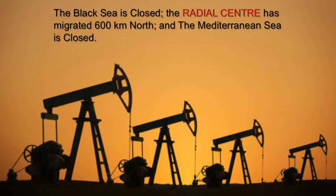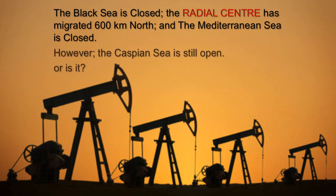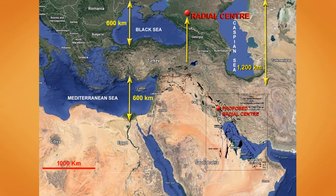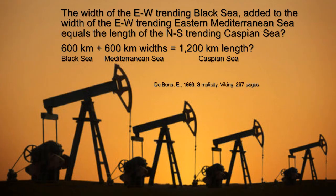The Black Sea is closed, the eastern Mediterranean Sea is closed. However, the Caspian Sea is still open — or is it? There may be a very simple relationship between the width of the Black Sea, the width of the eastern Mediterranean Sea, and the length of the Caspian Sea. Acknowledging this simple arithmetic, is it possible that the three seas — the Black Sea, the eastern Mediterranean Sea, and the Caspian Sea — all came into existence approximately at the same time due to expansion?